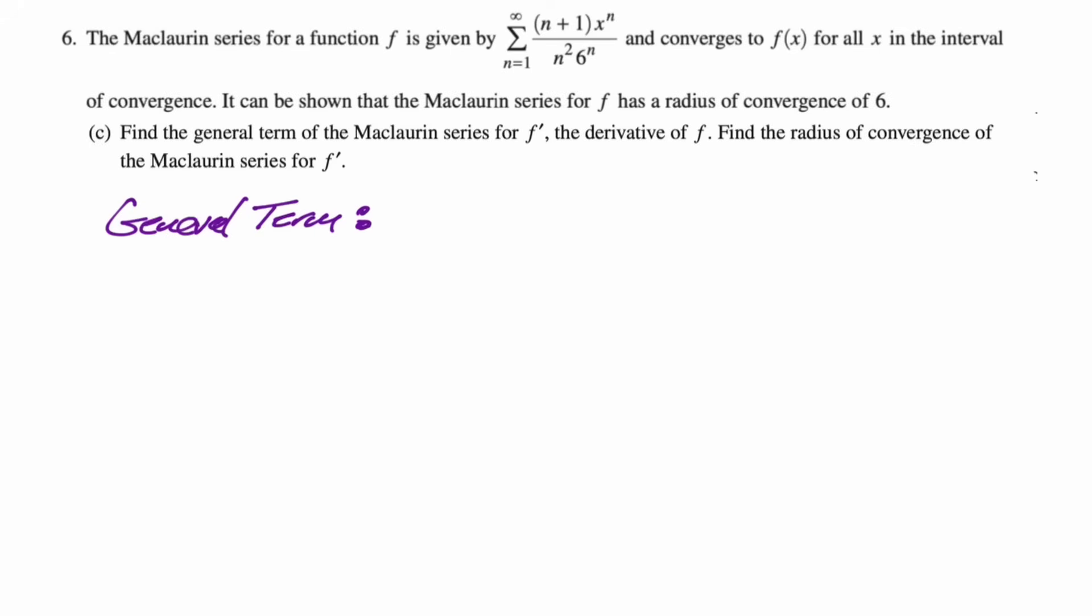What happens is when you bring the n down, the n and the n^2 in the denominator cancel, and we're going to end up with a general term that looks like (n+1)·x^(n-1) over n·6^n. So what happened there was we used the power rule on x^n to get nx^(n-1). The n from the numerator cancels with one of the n's in the denominator to leave us with just n instead of n^2, and everything else stays the same. That's the general term for f'.